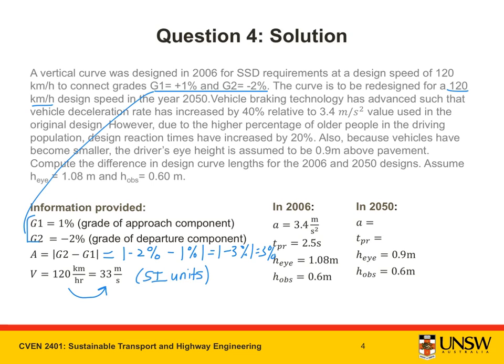Now let's interpret the rest of the information. We have been told that the vehicle braking technology has advanced such that the vehicle deceleration rate has increased by 40% relative to 3.4 meters per second squared. Now let's calculate a 40% increase of 3.4 meters per second squared. So in 2050, a is equal to 3.4 times 140%, which is an increase of 40%. Putting this into my calculator, I get 4.76 meters per second squared.